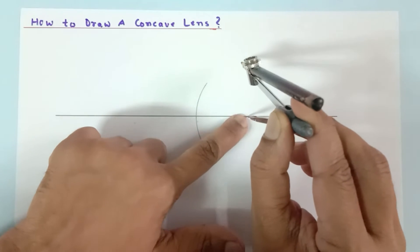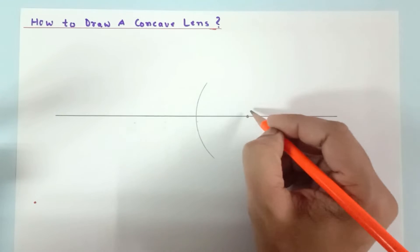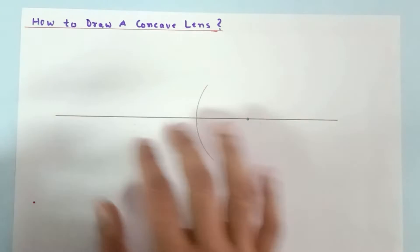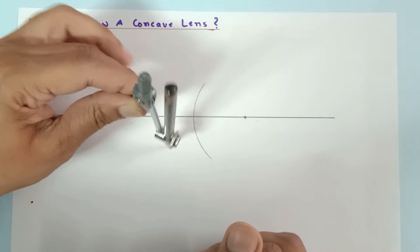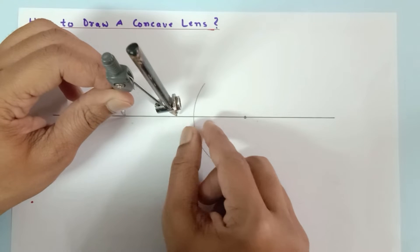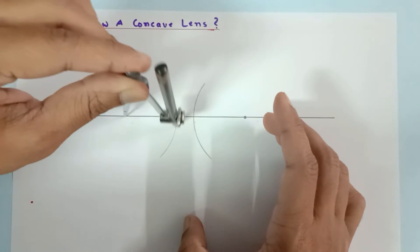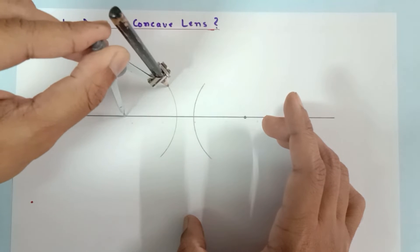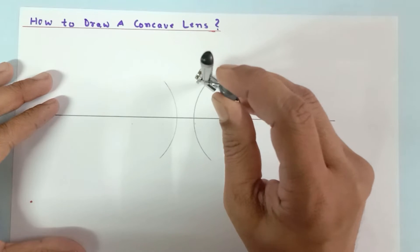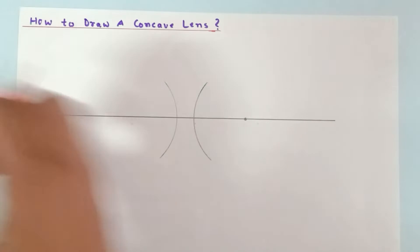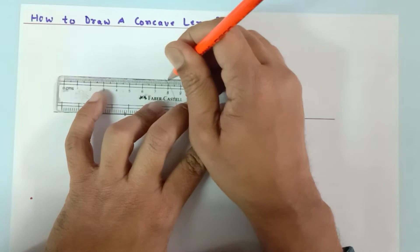Draw the arc like this, and remember this point — mark it with a pencil. Since this point was the center of this circle, it will be called 2f, as I'll explain afterwards. Now keeping the same distance, place the compass from the other side. You may vary the position of the needle to make the lens thick or thin. Here I'll make an intermediate lens. Mark these two points and join them to form a concave lens.